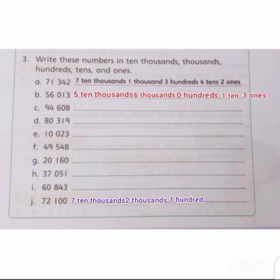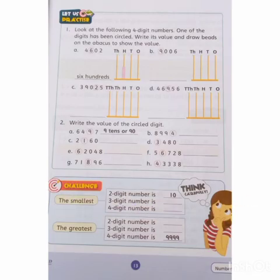Tens ki place value mein, hame 0 given hai, toh ham zero tens write kareenge. Ones ki place value mein hamein zero given hai, toh ham zero ones write kareenge. Do part c to i of question number 3 by on.